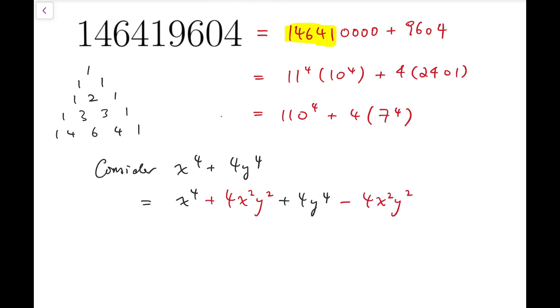Next, you have to subtract that by 4x squared y squared. And so, for the first three terms, it's equal to x squared plus 2y squared whole squared, and then the second term, as in the last term, but the things that are not highlighted in yellow, is 2xy whole squared.